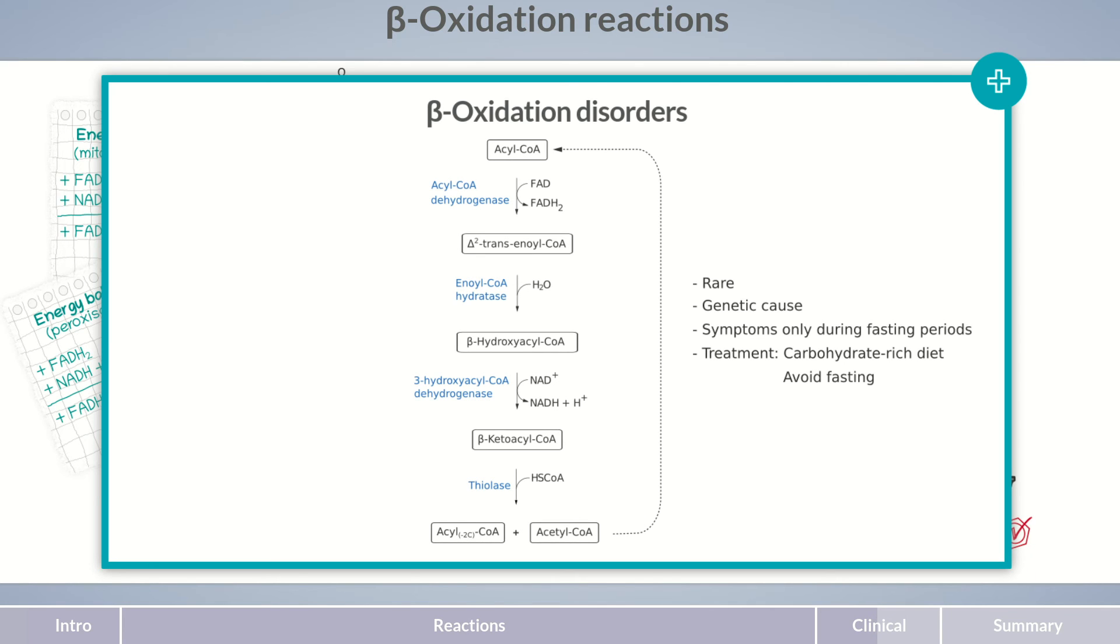The most common condition associated with beta-oxidation is MCAD deficiency, which is due to defective acyl-CoA dehydrogenase. This enzyme is responsible for the oxidation of medium-chain fatty acids. Defects in the corresponding enzyme for very long-chain fatty acids can also occur. This condition is termed VLCAD deficiency. Another frequently occurring disorder is LCHAD deficiency, which is characterized by a defective 3-hydroxyacyl-CoA dehydrogenase. This enzyme is responsible for catalyzing the second oxidation of long-chain fatty acids. By the way, testing of the mentioned enzymes is part of newborn screening.